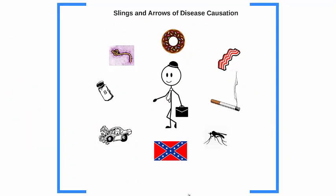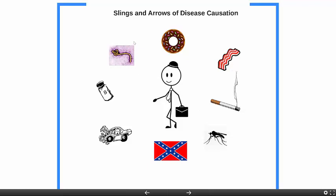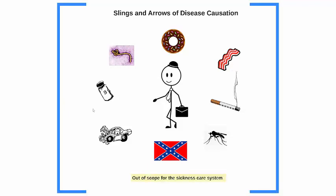When we think about how that building block system interacts with what causes disease, we want to think about the modern burden of disease. We still have problems of infectious diseases like Ebola and mosquito-borne illness, but we also have the common problems in non-communicable diseases like sugar and fatty doughnuts, bacon, tobacco, racism, human oppression, automobile crashes, and unhealthy diets with salt and trans fats. This is what makes people get sick, but these are out of scope for the sickness care system.